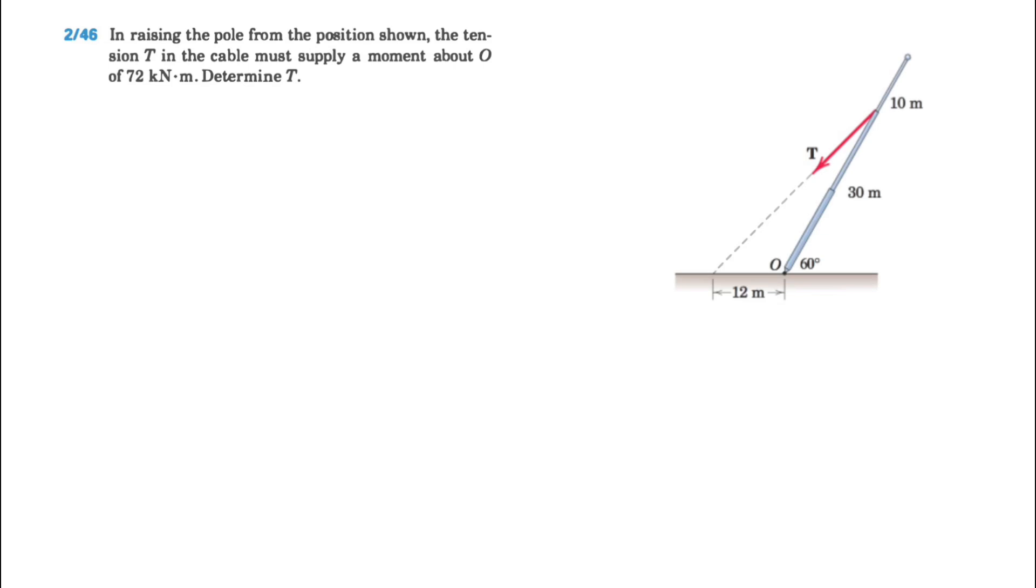We need to determine T. So basically what we have in the question as a given is that we know the moment of T about O is 72 kilonewton meter. Looking at the moment, we'll see that this tension is going to make a moment in this direction about O. And since we call the counterclockwise as always positive, this will be positive too since the moment is counterclockwise.